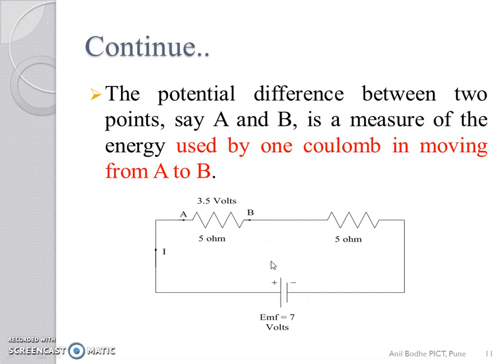Now, if we define the potential difference through the same circuit, then the potential difference between two points, say A and B, is a measure of energy used by one Coulomb in moving from A to B.